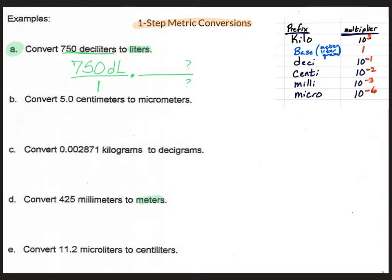We're going to put the deciliters on the bottom because it cancels with the deciliters that's currently on the top — the 750 deciliters. When we do that conversion, we're going to put liters on top of the deciliter. Now we need to figure out what we're going to do with that multiplier.